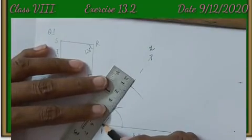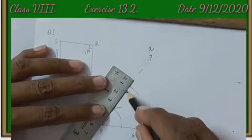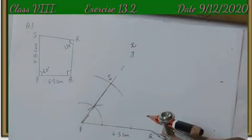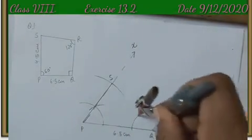Now, PS is the required line segment for the quadrilateral. So, we will make it a straight line.